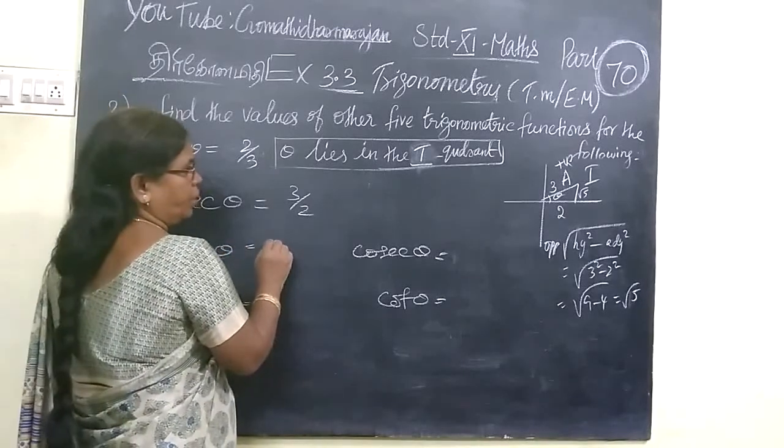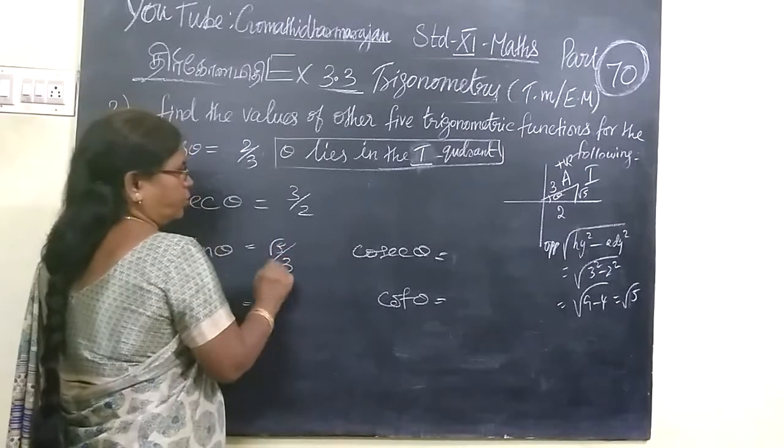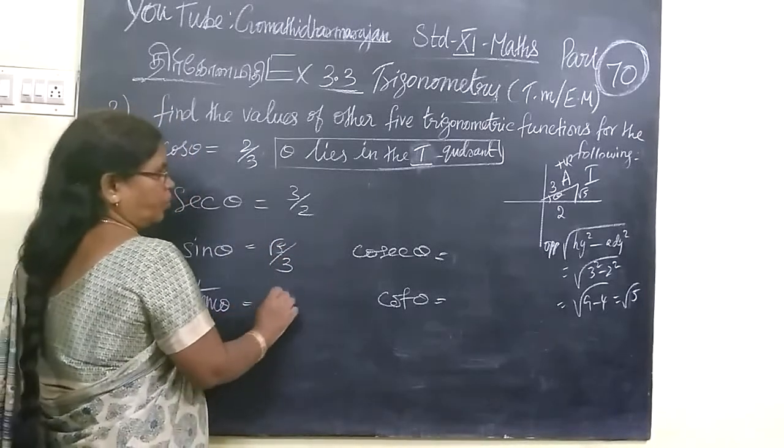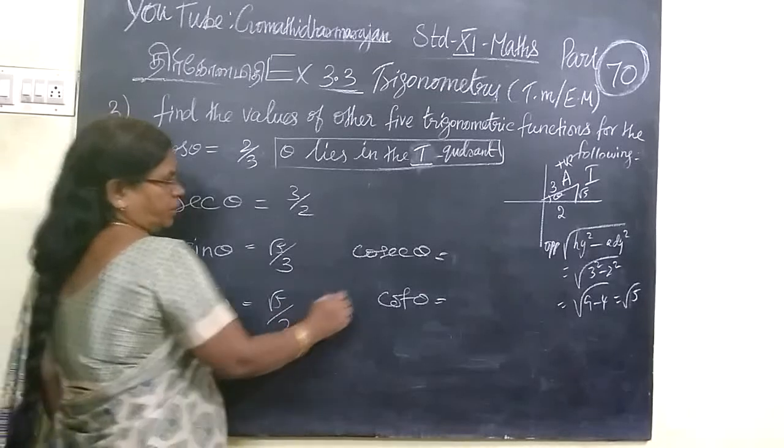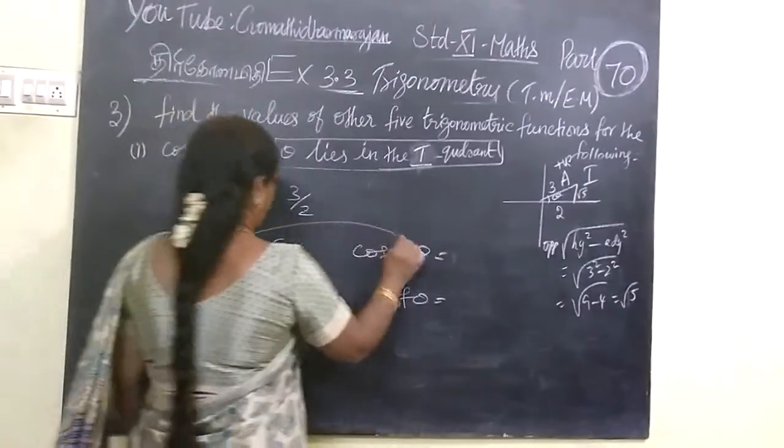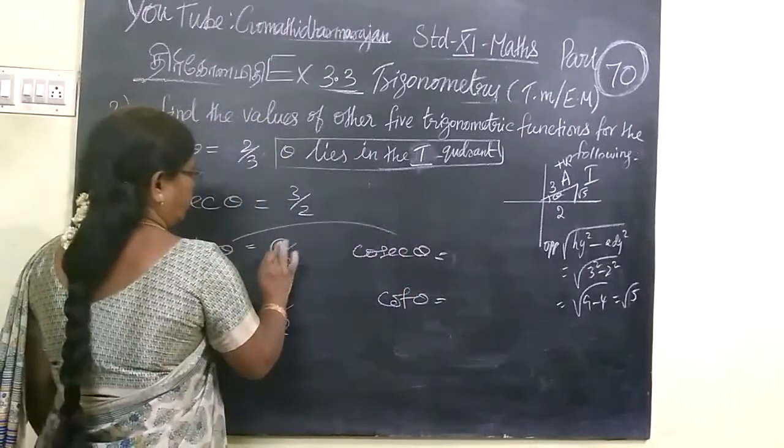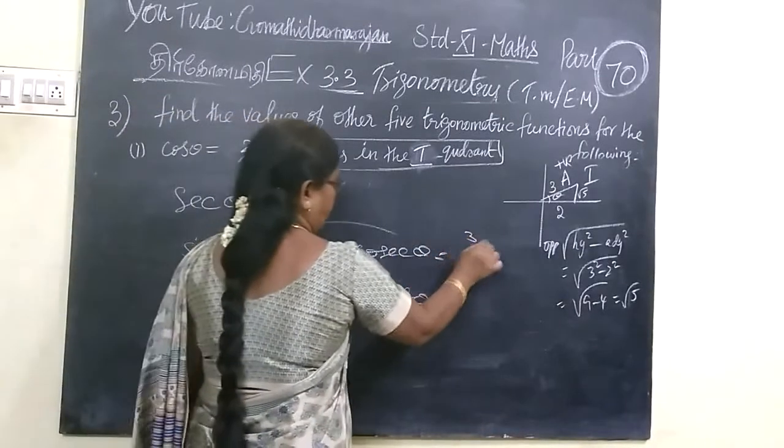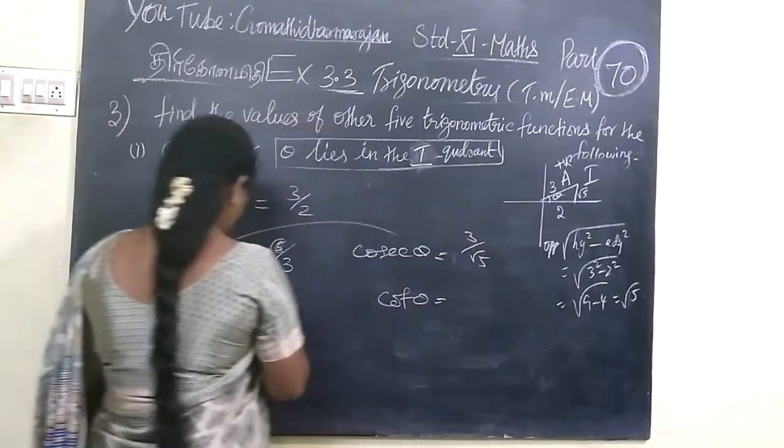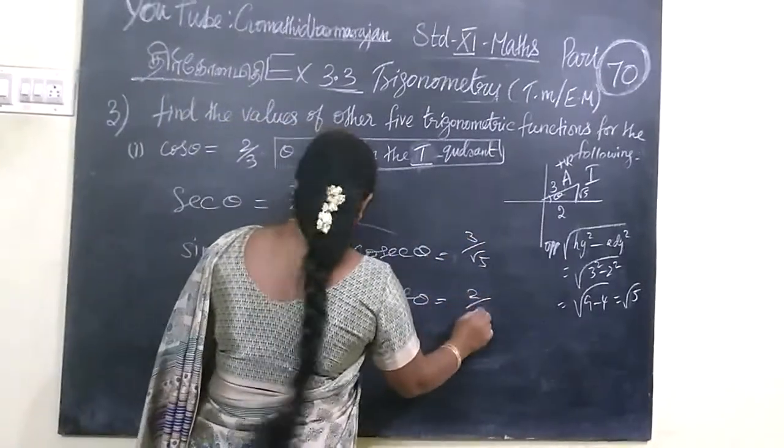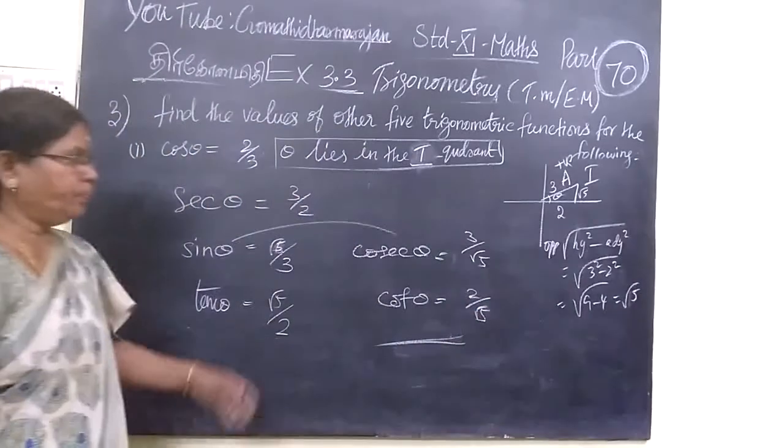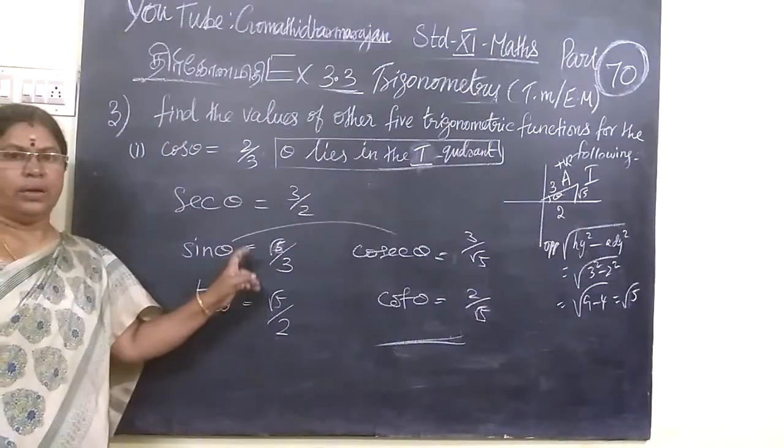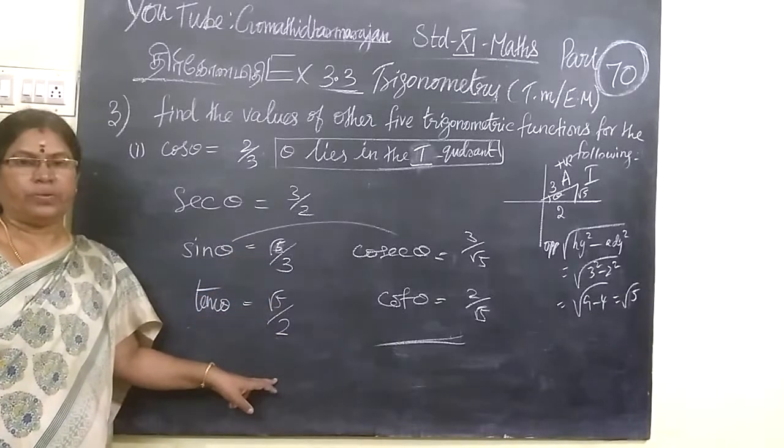You will say no need to write. Yes, opposite by hypotenuse. Then tan, opposite by adjacent. Csc is not missing. So here you write 3 by root 5, then 2 by root 5.